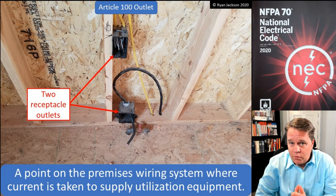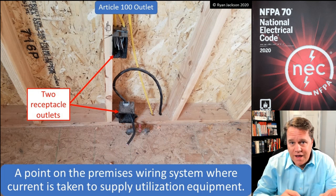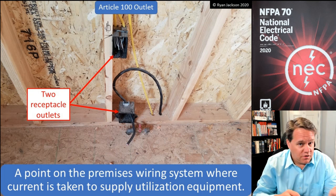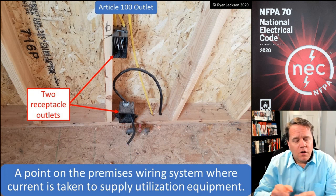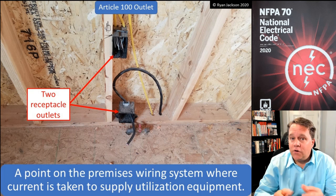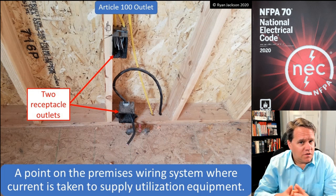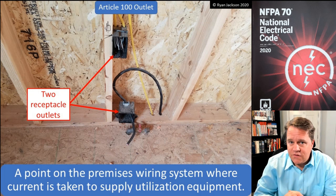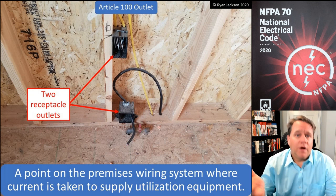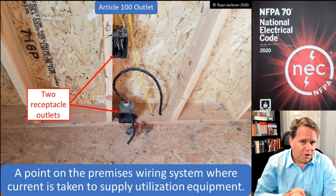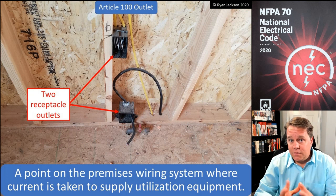In 210.8, subsection A talks about receptacles in dwellings, B talks about receptacles in other than dwellings. If you keep reading, you'll see some requirements for dwellings and other than dwellings that talk about outlets. It's a little bit confusing if you don't know the definition of an outlet, because when it says that outdoor outlets have to be GFCI protected, you might think you already read that — of course outdoor receptacle outlets have to be protected. But there's a difference between an outlet and a receptacle outlet or a lighting outlet.